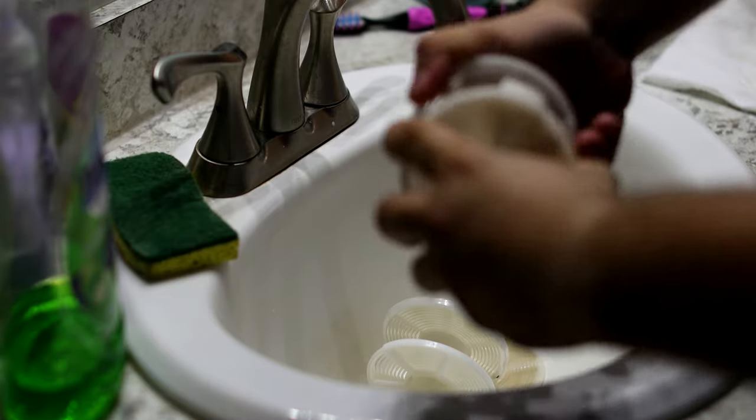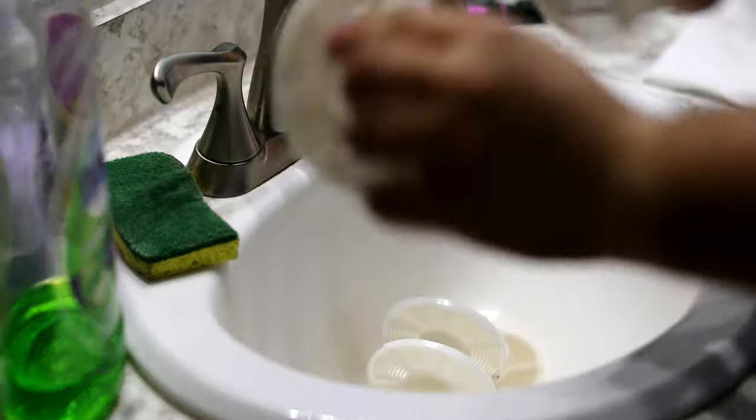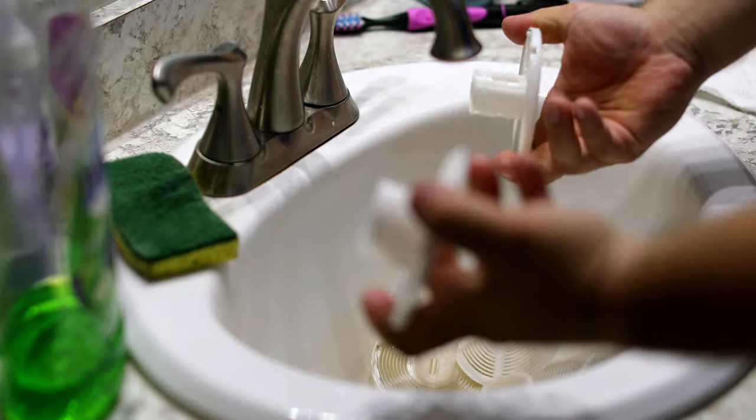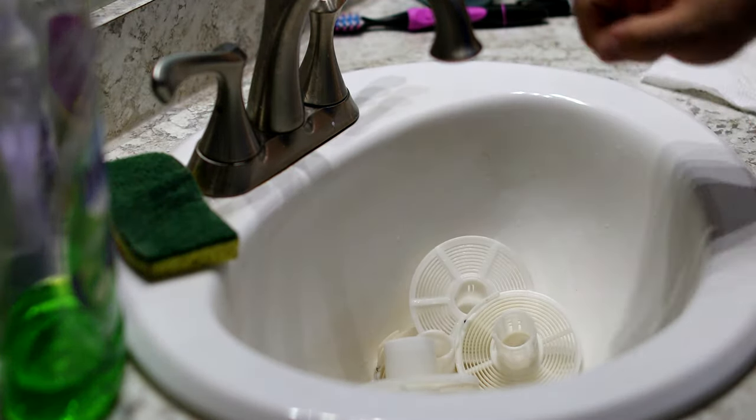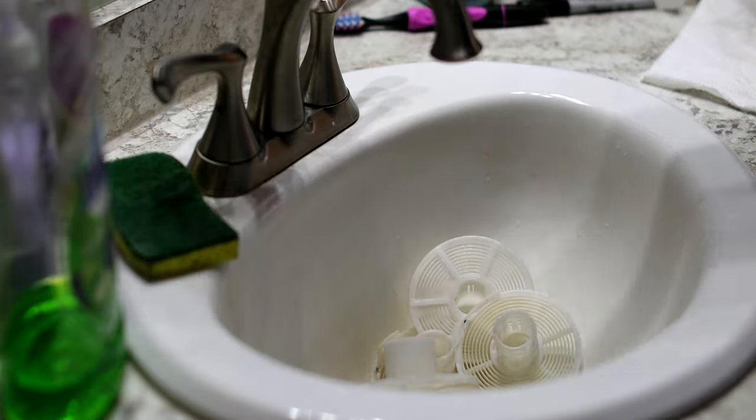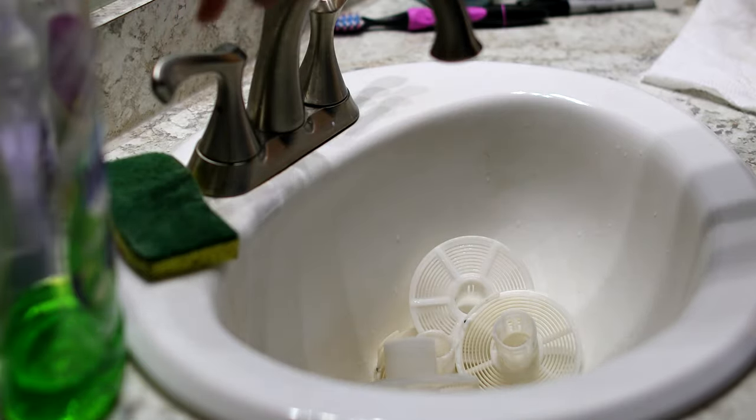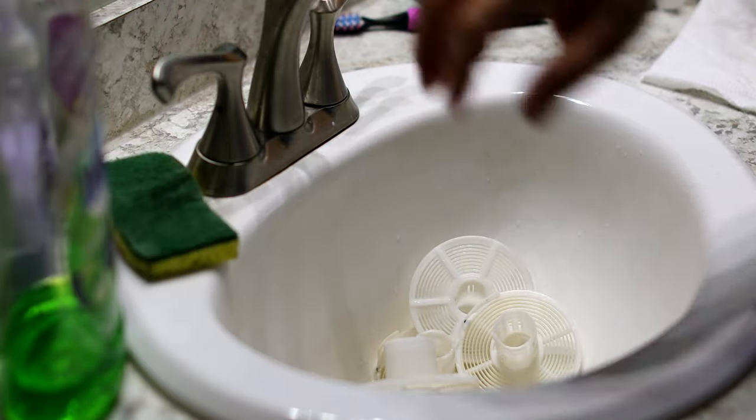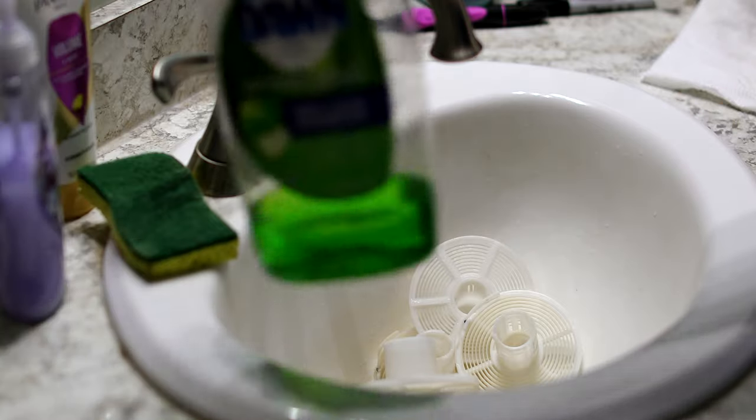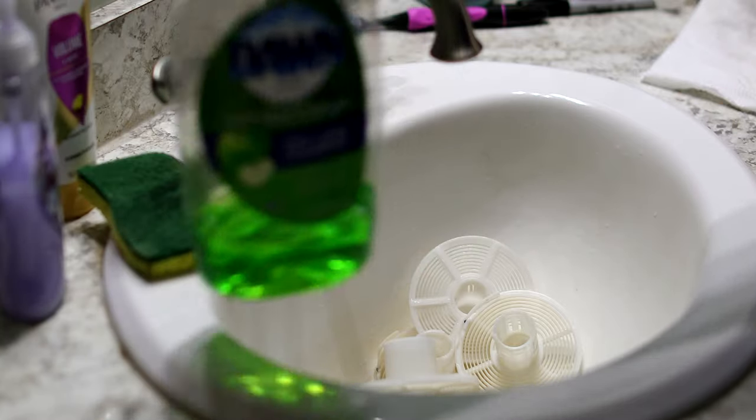So the first thing you want to do is just open up your reels, separate the two, close your sink and turn on as hot of water as you can get through the tap. That's gonna help you out significantly. Grab some dish soap, you just need a few drops of this.